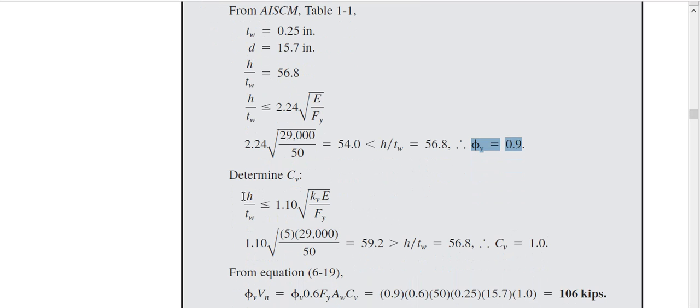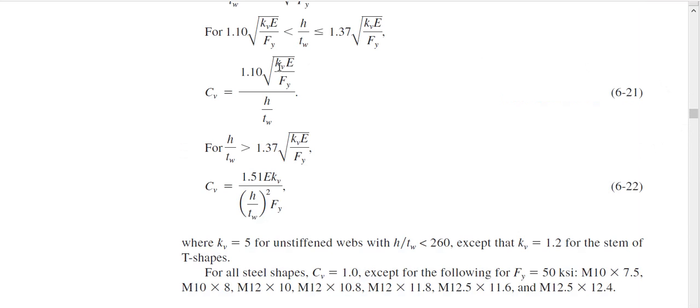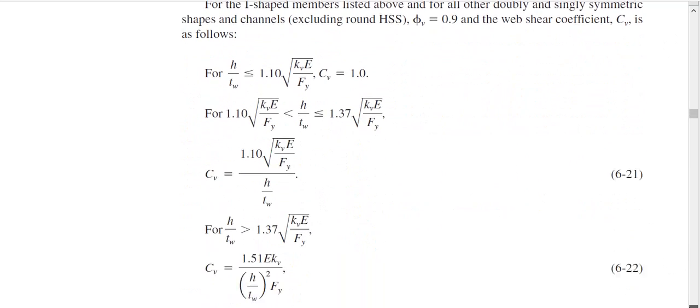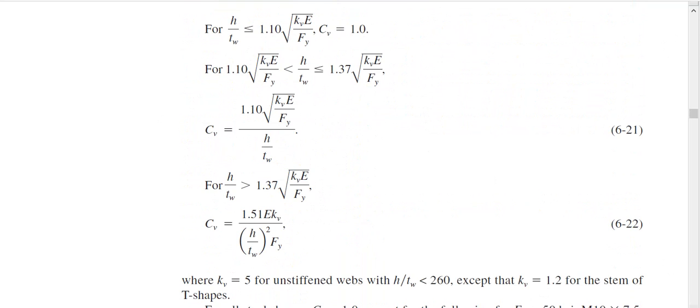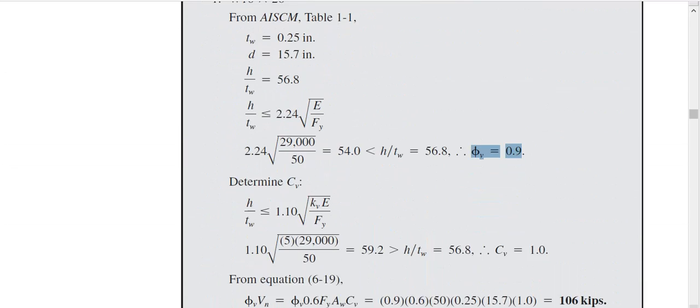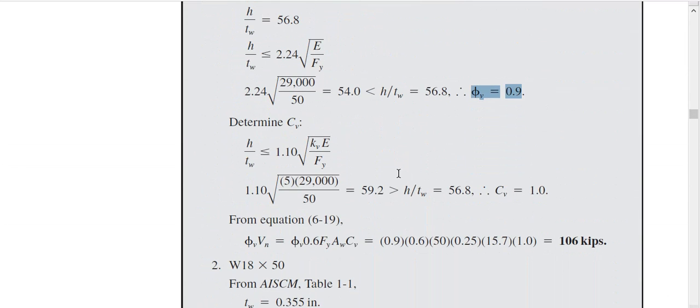Then we went here to find which condition, which is our condition, then we'll calculate. Then we found Cv, first we found out our case, which case we are. So we found that our case is the first case. This ratio, this ratio is 59, and that is 56, we found earlier 56.8. That means, our Cv is one. We are lucky, we could find it.